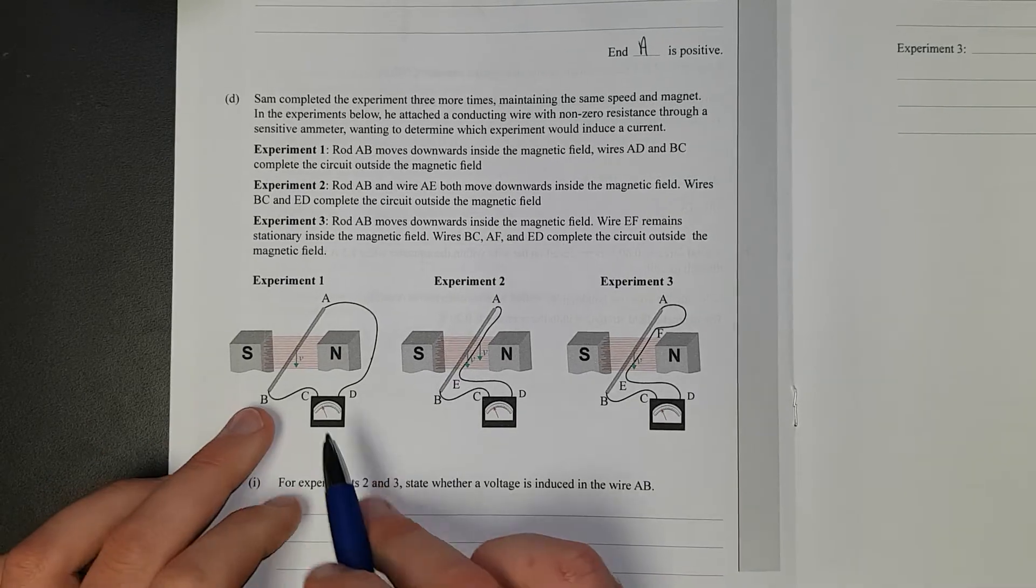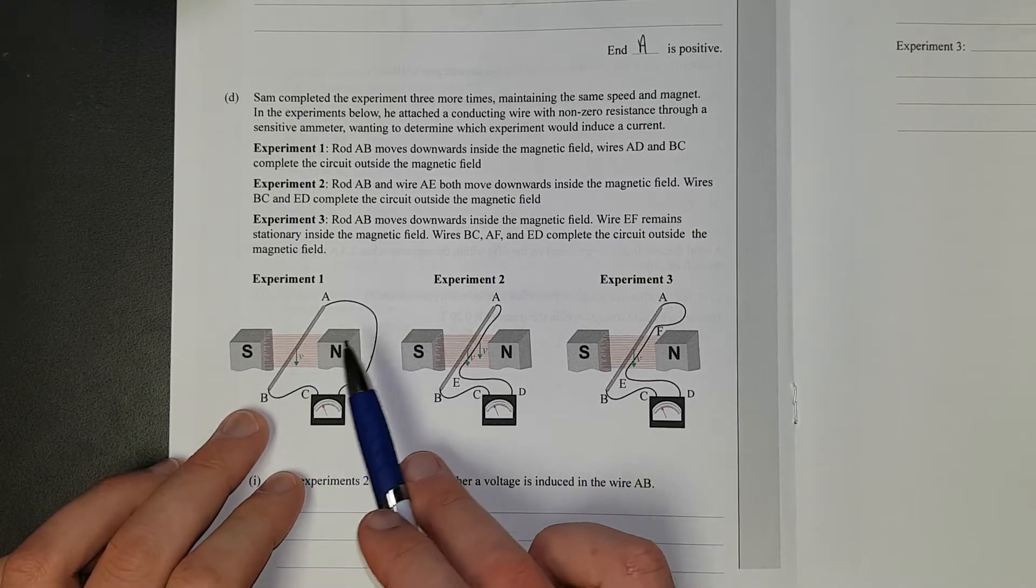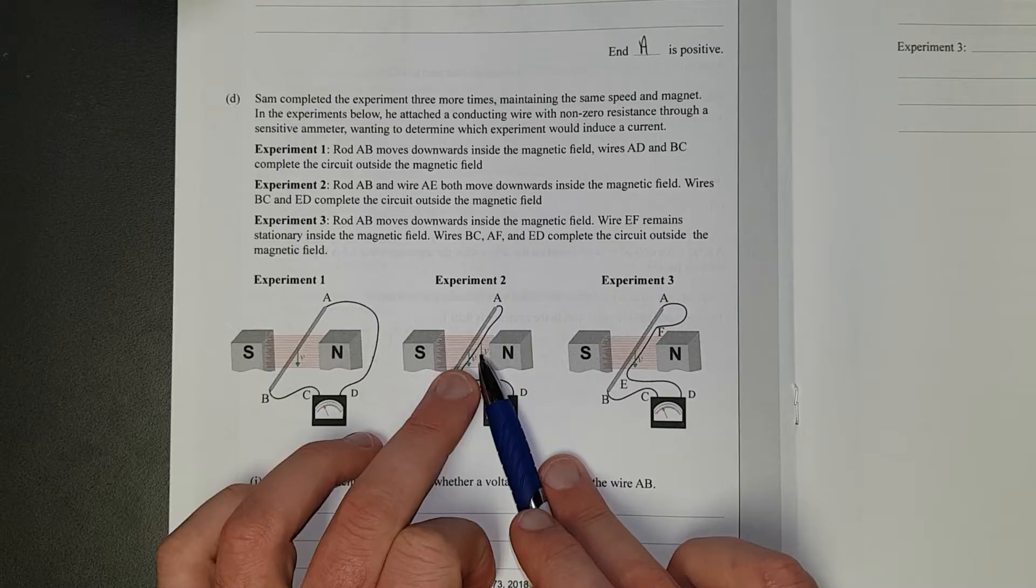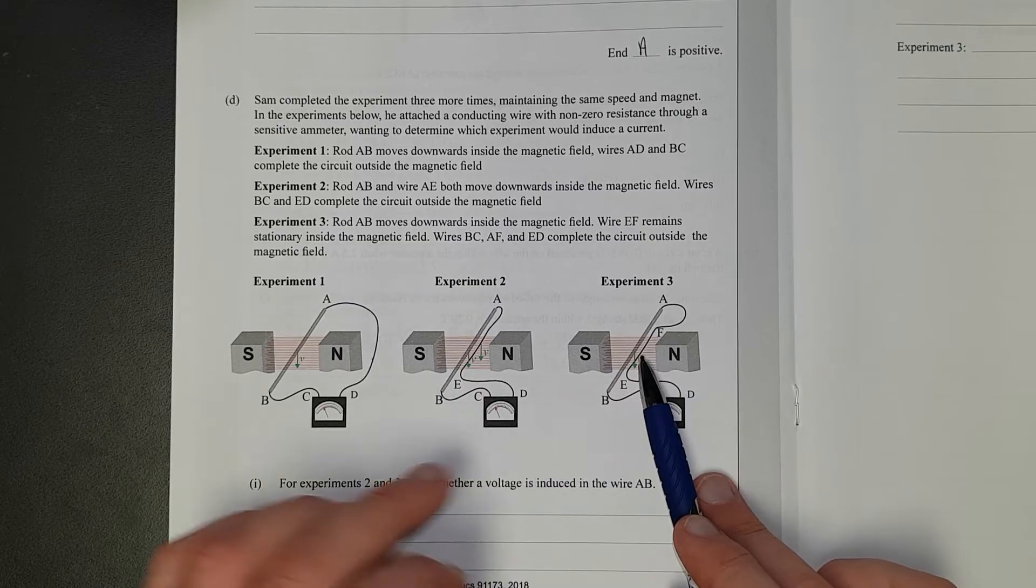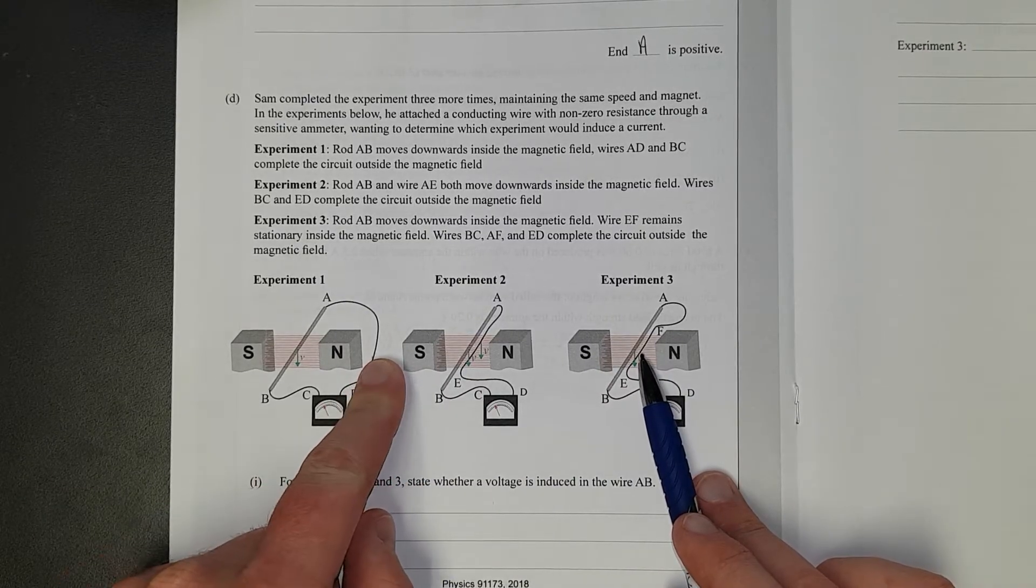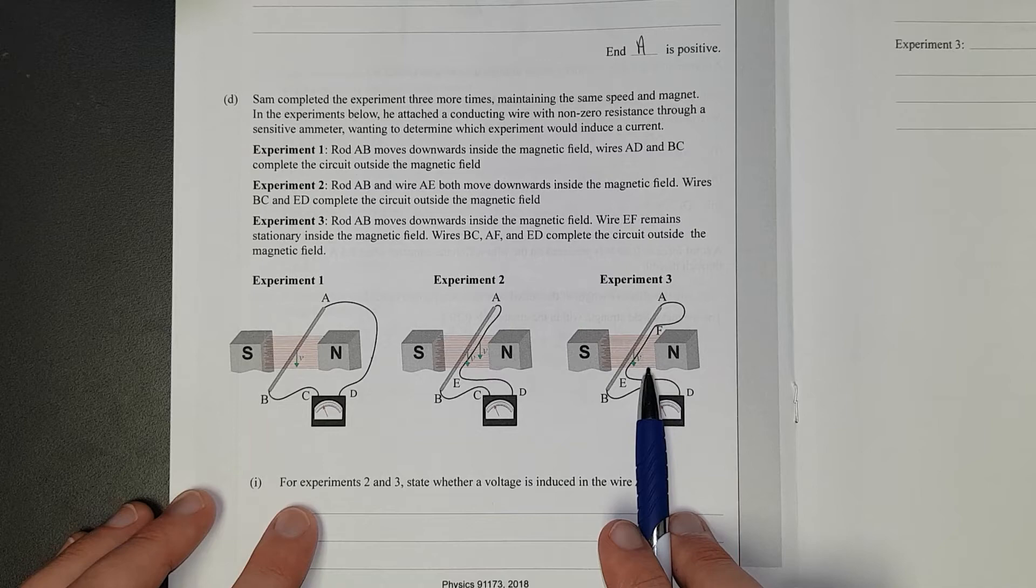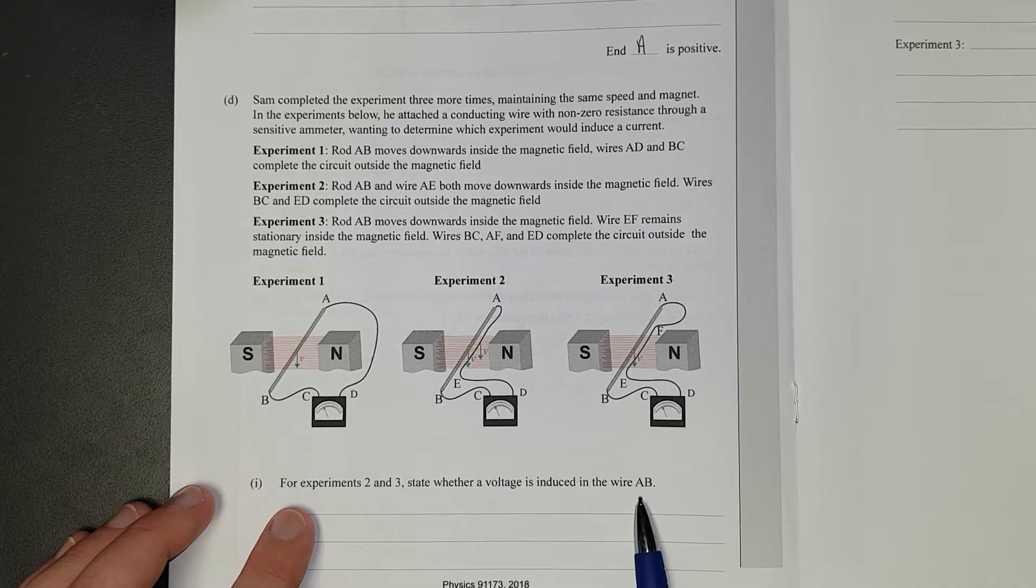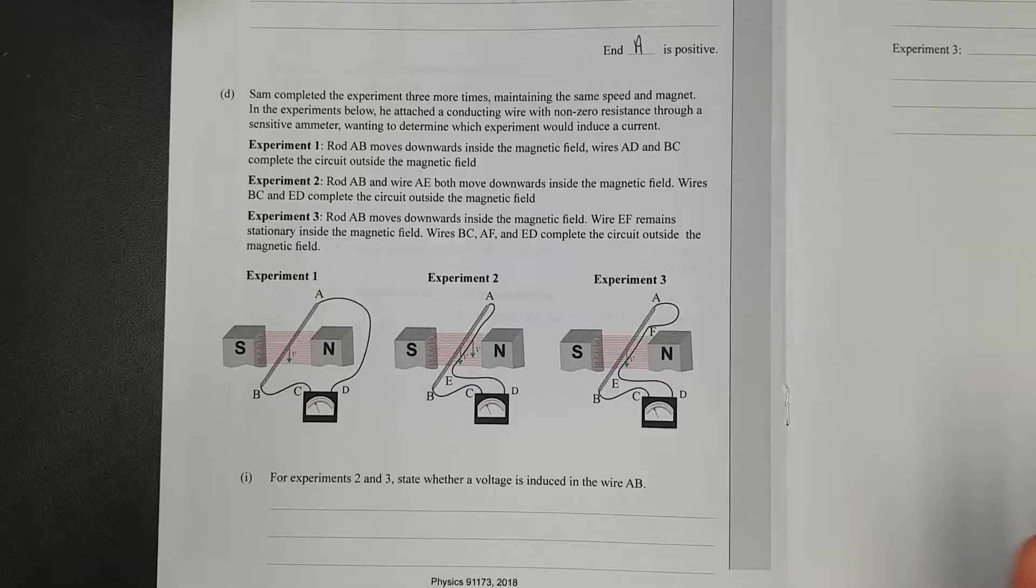What do we got? We've got three experiments. We have one experiment where the rod is moving just through the magnetic field. One experiment where the rod and the wire is moving through the magnetic field. Another experiment where the rod is moving through the magnetic field, the wire is not. But this one here, the wire is outside of the magnetic field. Sweet. That pretty much covers it. You can read that, but that sums it up. For the experiments two and three, state whether a voltage is induced in a wire AB. There is no wire AB. They're all rods, but whatever. That's just a mistake that they made in writing this paper.